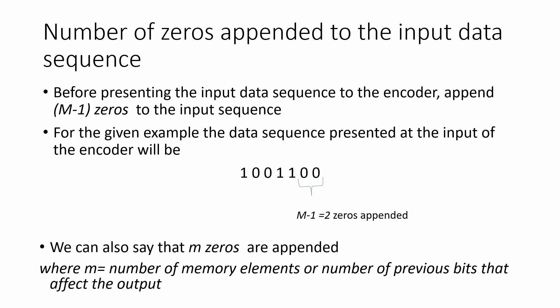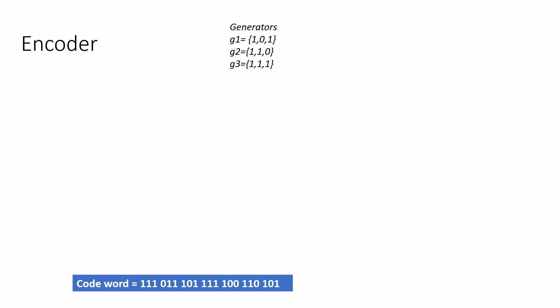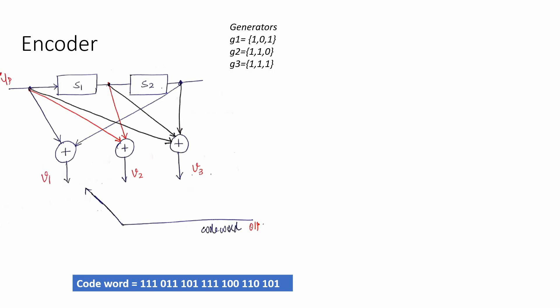We have to design the encoder for the given generators G1, G2, and G3. As mentioned in the problem, we have two stages in the shift register, S1 and S2, and three modulo-2 adders labeled 1, 2, and 3. The outputs of the modulo-2 adders are V1, V2, and V3. There is also one multiplexer at the output — this switch acts as the multiplexer which multiplexes all three outputs in one clock cycle to form the output codeword sequence.